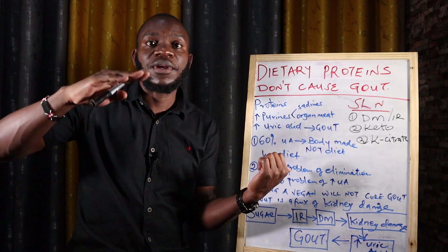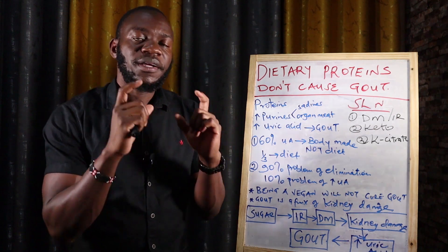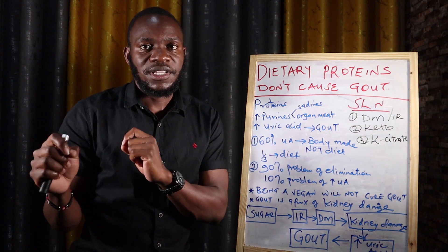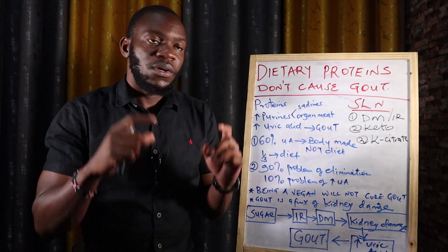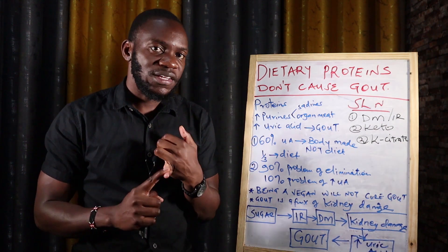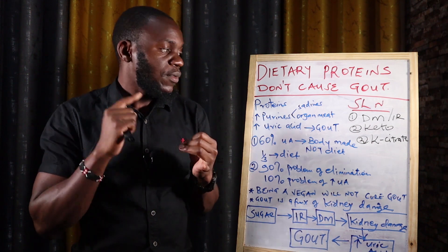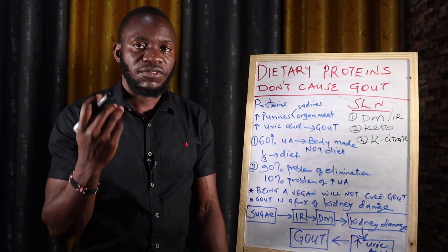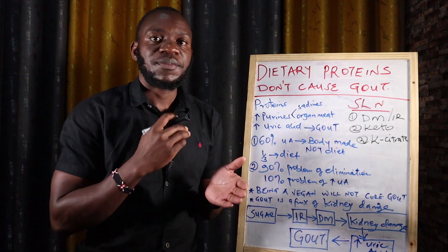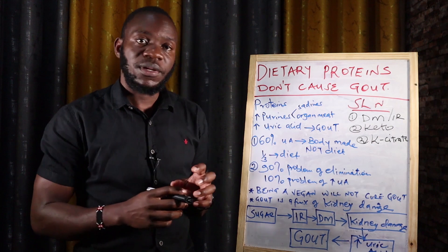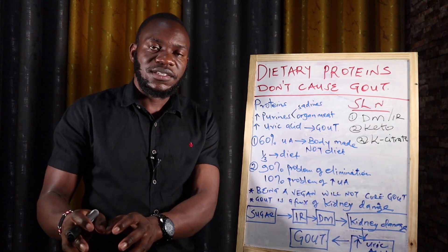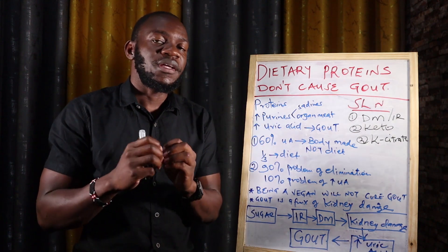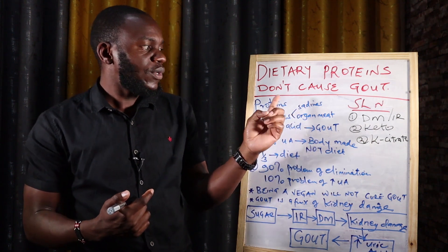When the kidneys have a problem, uric acid starts to build up in your bloodstream. The number one condition that affects the kidneys is diabetes mellitus — specifically type 2. Diabetes mellitus affects the eyes causing retinopathy, the brain and nerves causing neuropathy, and the kidneys, where it damages the nephrons to cause nephropathy. If you are diabetic, you will have a kidney problem, and that kidney problem impairs elimination of uric acid, causing it to build up and precipitate in your joints as gout.